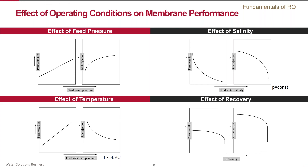The flux increases with temperature while the rejection goes down — both phenomena are related to diffusion through the membrane. Finally, regarding the recovery effect: as recovery increases, the water flux decreases because of the increase in osmotic pressure, until recovery is so high that the osmotic pressure of the feed water equals the applied pressure, at which point the driving force for water through the membrane becomes zero and flow stops. The drop in water flux affects the apparent salt rejection in a similar way.